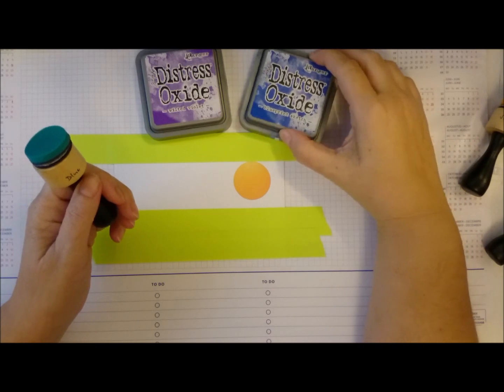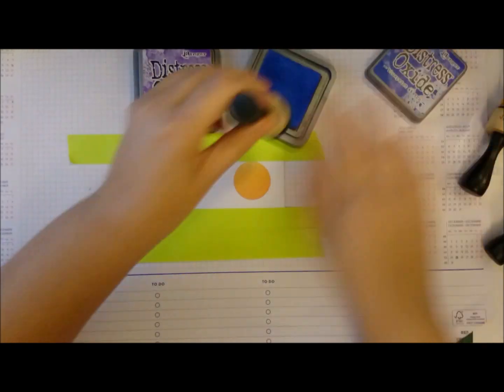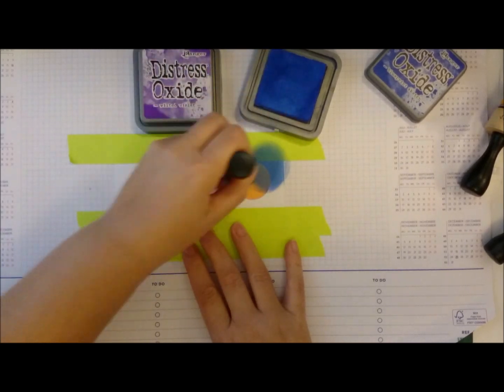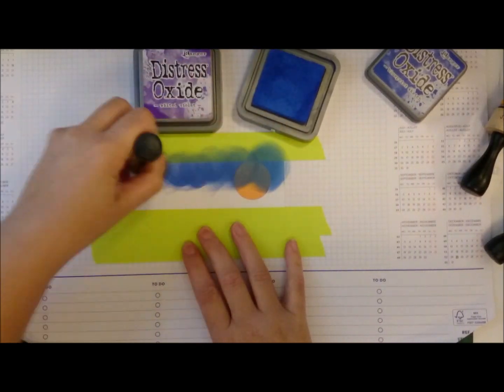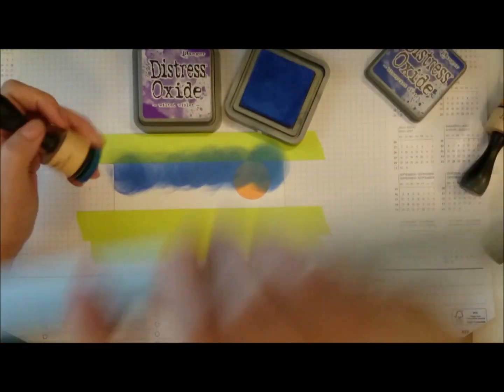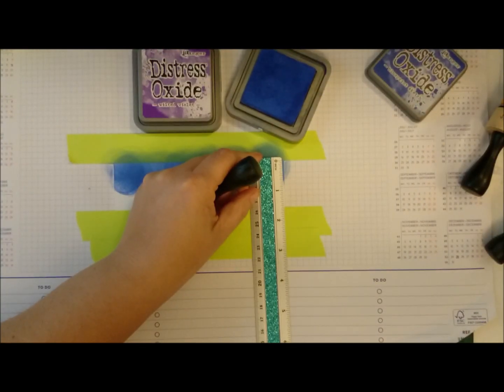Now I'm using Distress Oxides, Blueprint Sketch and Wilted Violet. Seedless Preserves would have been better but I guess I pulled out the wrong one.